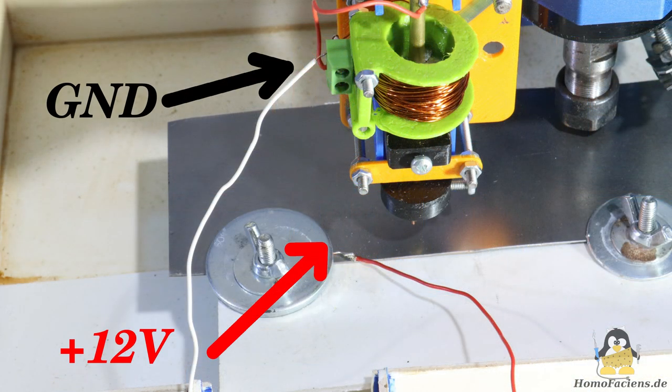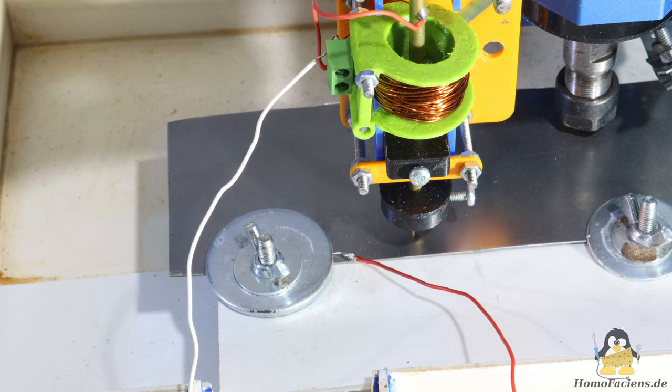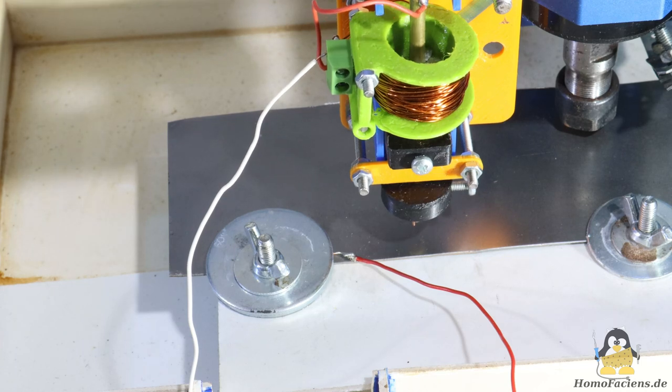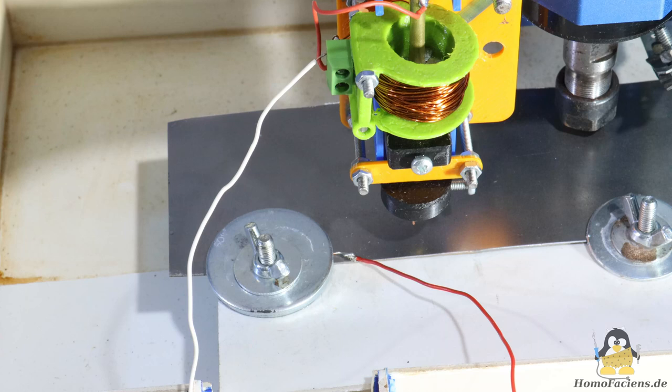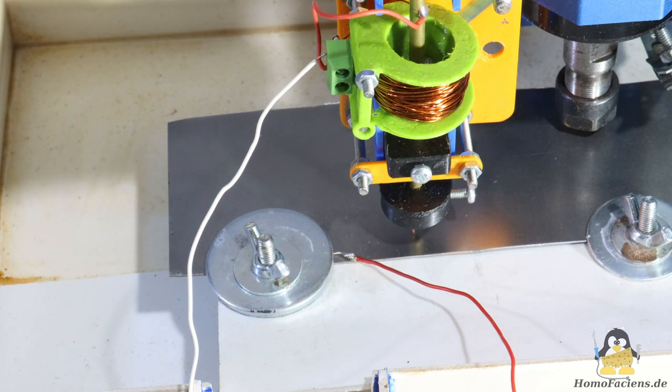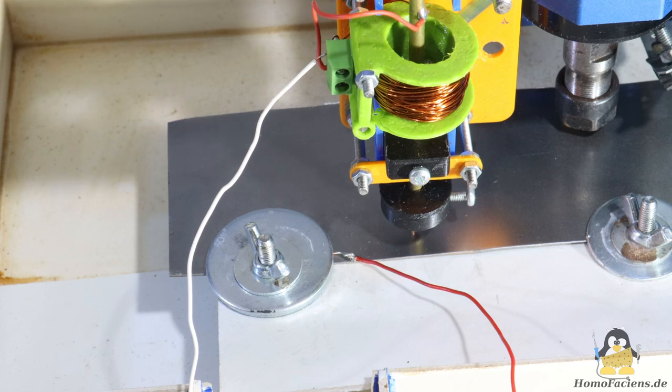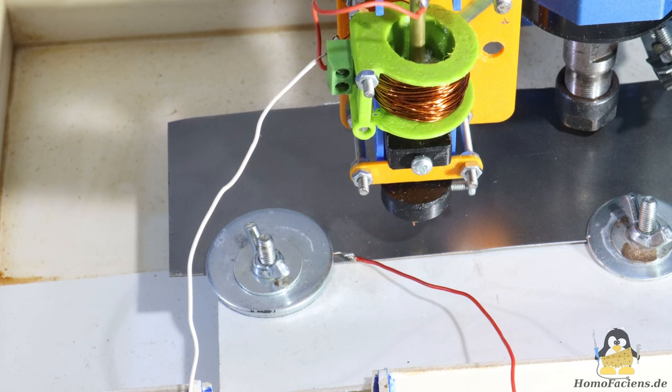The workpiece to be machined acts as one contact of a switch, with the tip of the hammer being the second. If the hammer has fallen down, the circuit is closed and the electromagnet is energized. This pulls the hammer upwards but immediately interrupts the flow of electricity. Without power, the hammer falls back down until contact is made with the workpiece and the process begins again.